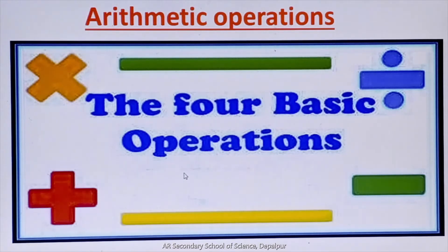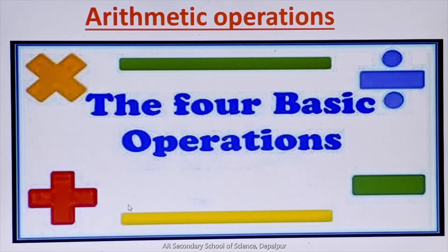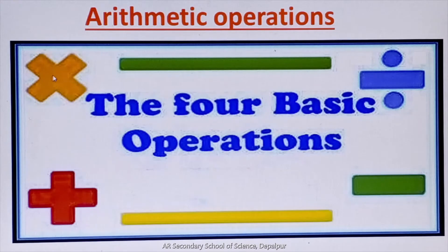Yeh sign hai — these are also called arithmetic operations. Inko arithmetic operations bhi kehte hain. Yeh kaun sa sign hai? Good, yeh addition ka sign hai. Addition ke sign ko hum kyun use karte hain? Very good, do ya do se zyada numbers ko add karne ke liye hum addition ka sign use karte hain. Is sign ka kya naam hai? Very good, yeh subtraction ka sign hai. Yeh kaun sa sign hai? Good, yeh multiplication ka sign hai. Multiplication ke sign ko hum kyun use karte hain? Very good, do ya do se zyada numbers ko multiply karne ke liye hum multiplication ka sign use karte hain. Yeh division ka sign hai.